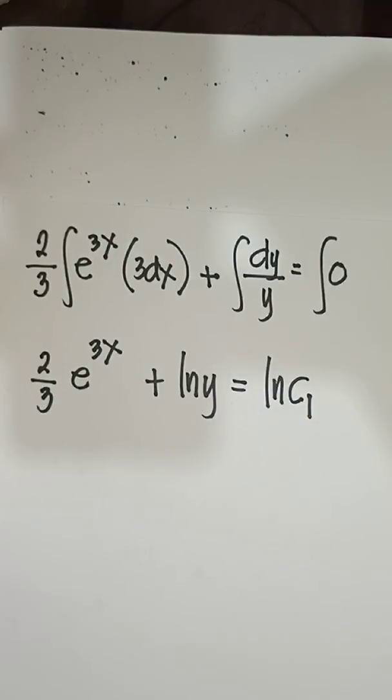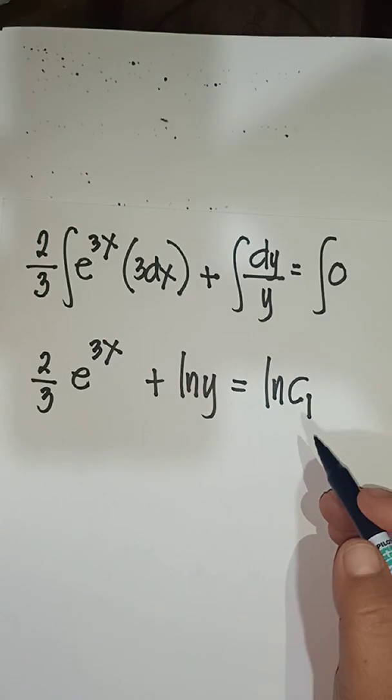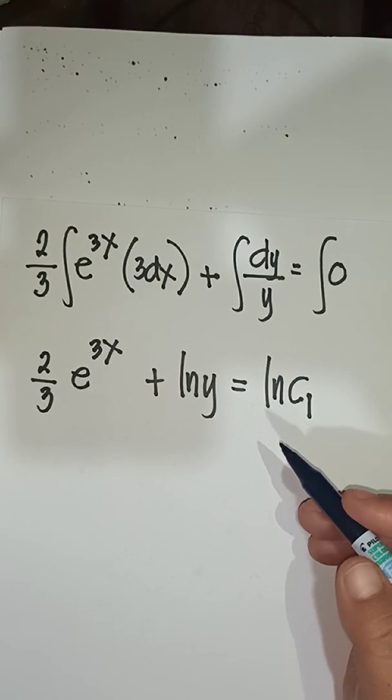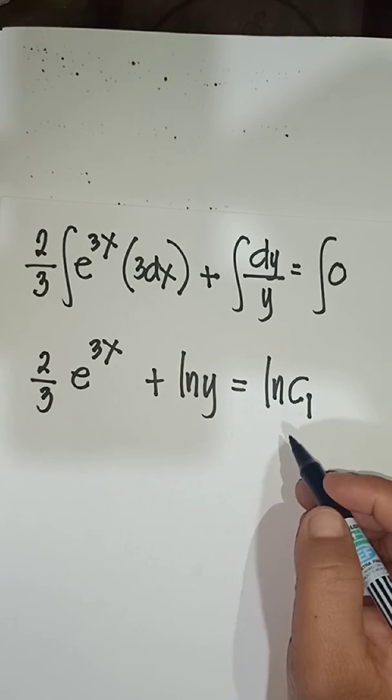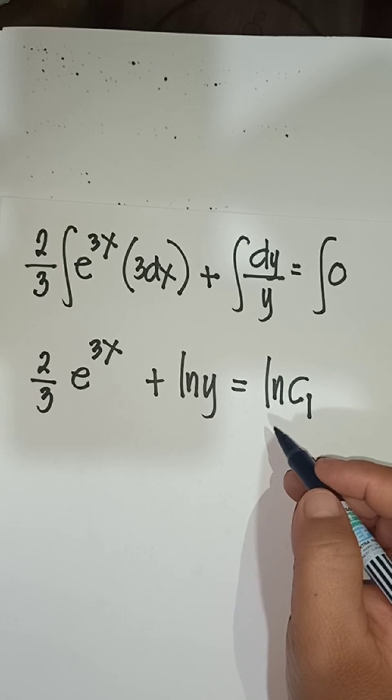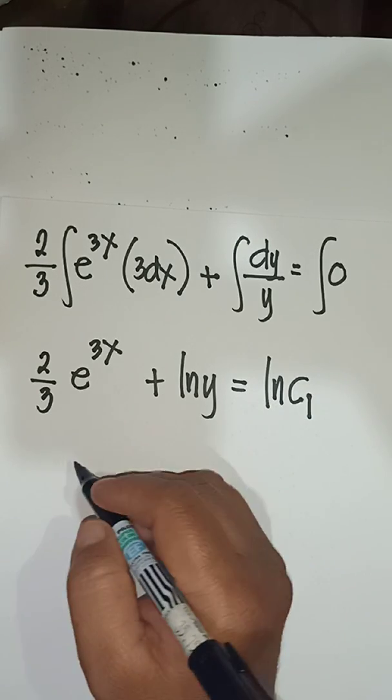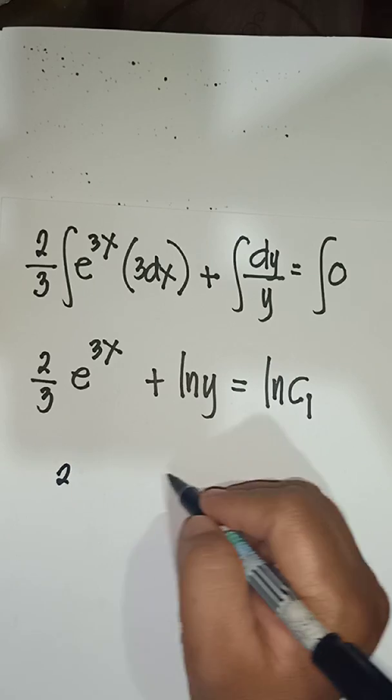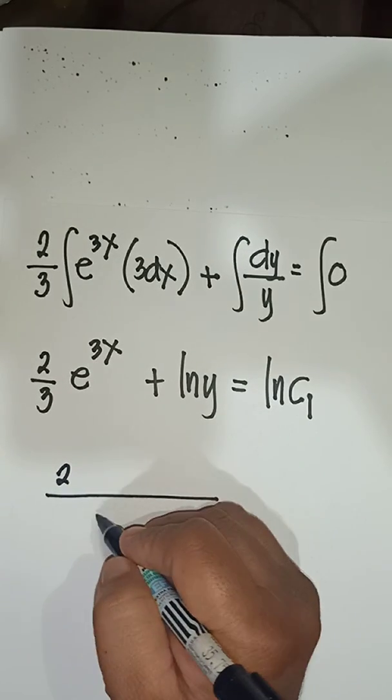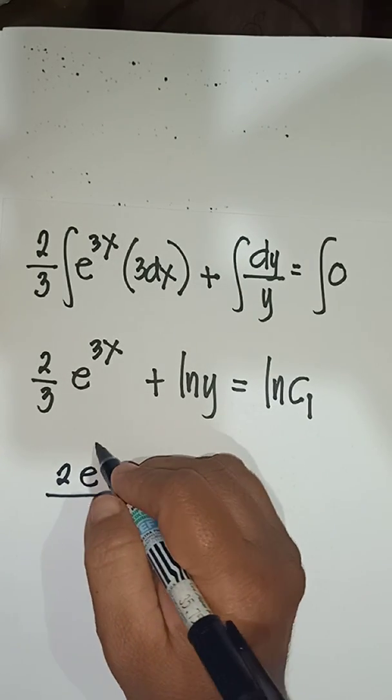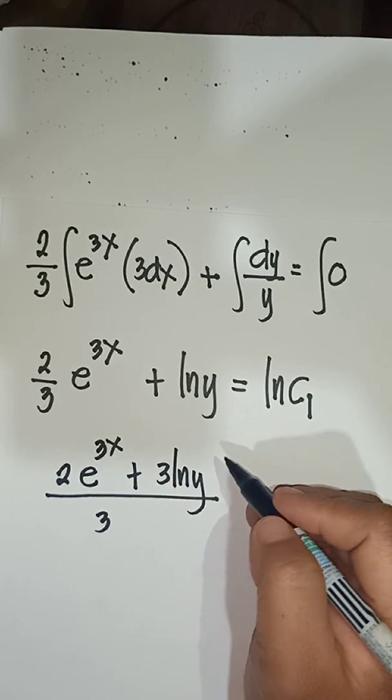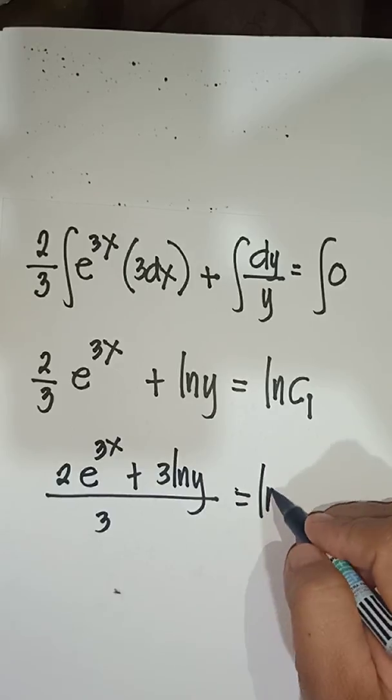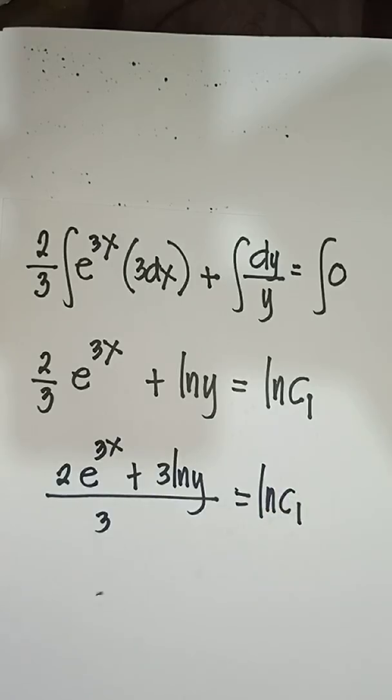We can make LCD as 3, so you will have 2 over 3, e^(3x), plus 3 ln of y, equal to ln of c sub 1.